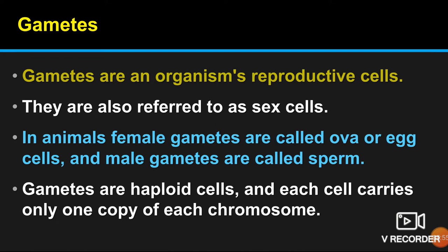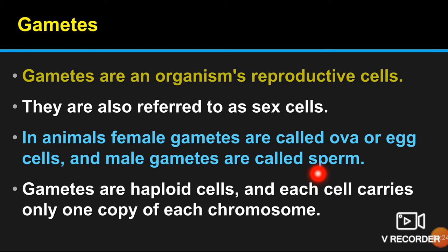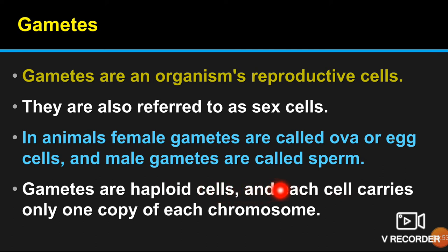Gametes are nothing but an organism's reproductive cells. They are also referred to as sex cells. In animals, female gametes are called ova or egg cells, and male gametes are called sperm — including in humans. Gametes are haploid cells, meaning they have a single set of chromosomes. Each gamete carries only one copy of each chromosome.